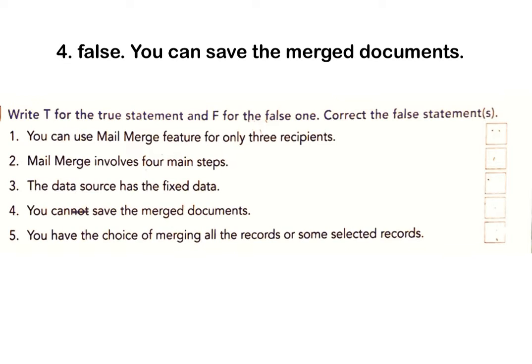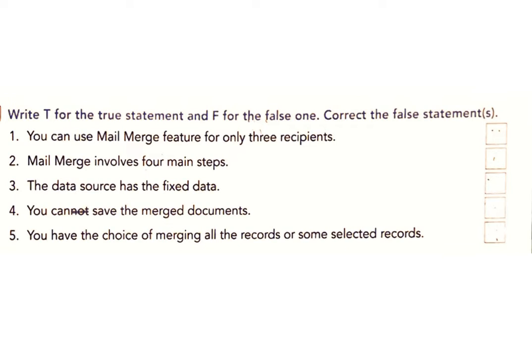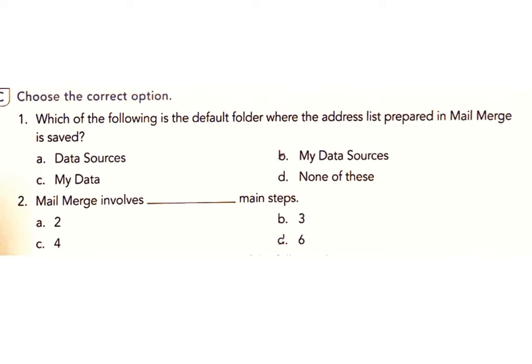C: The data source has the fixed data. Answer: False — the data source has variable data. D: You cannot save the merged documents. Answer: False. You can save the merged documents. E: You have the choice of merging all the records or some selected records. Answer: True.